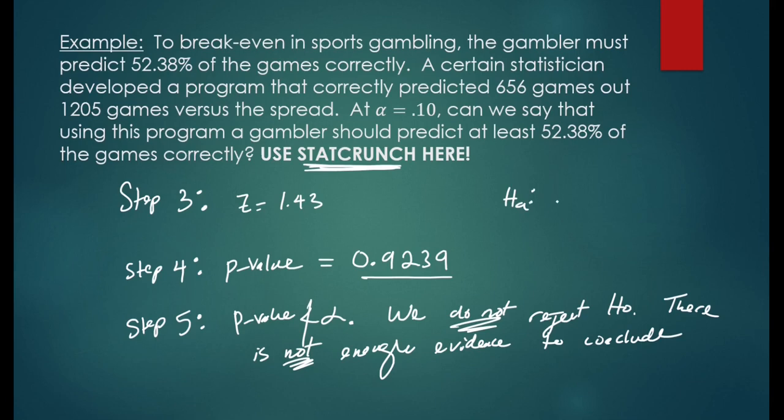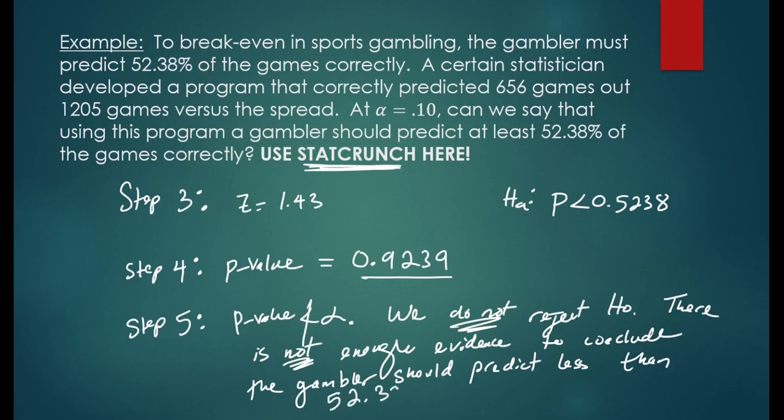The alternative hypothesis was p was less than 0.5238. So we're going to say we do not reject the null hypothesis. There is not enough evidence to conclude the gambler should predict less than 52.38% of games.